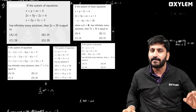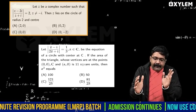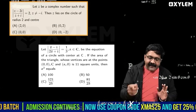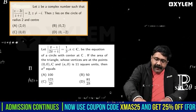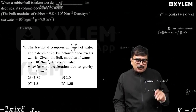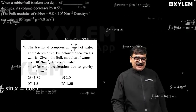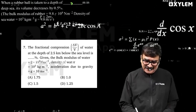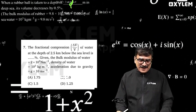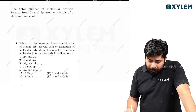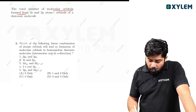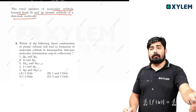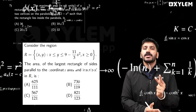There's a question about the equation. What does that mean? I said the rubber pole is taken to a depth of d meters, then the depth is calculated. The total number of molecular orbitals formed from 2s and 2p atomic orbitals of a diatomic molecule.